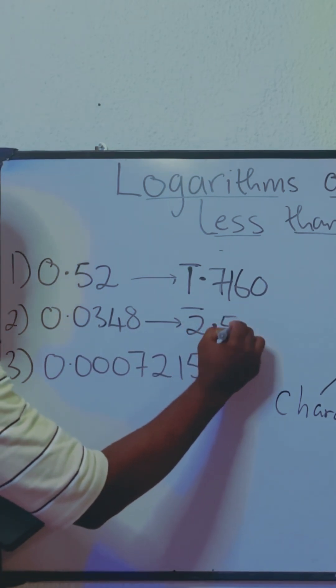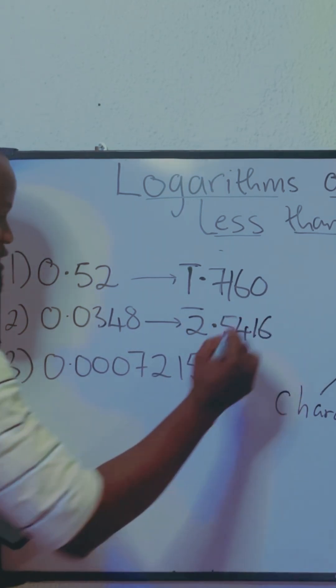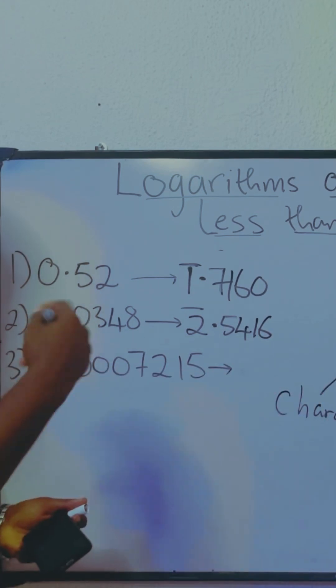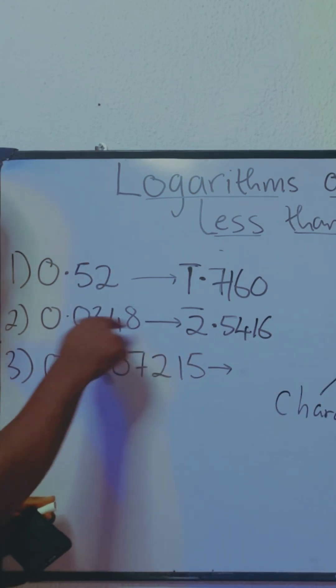0.5416. We're only interested in the mantissa. So that zero has already been occupied by bar two.